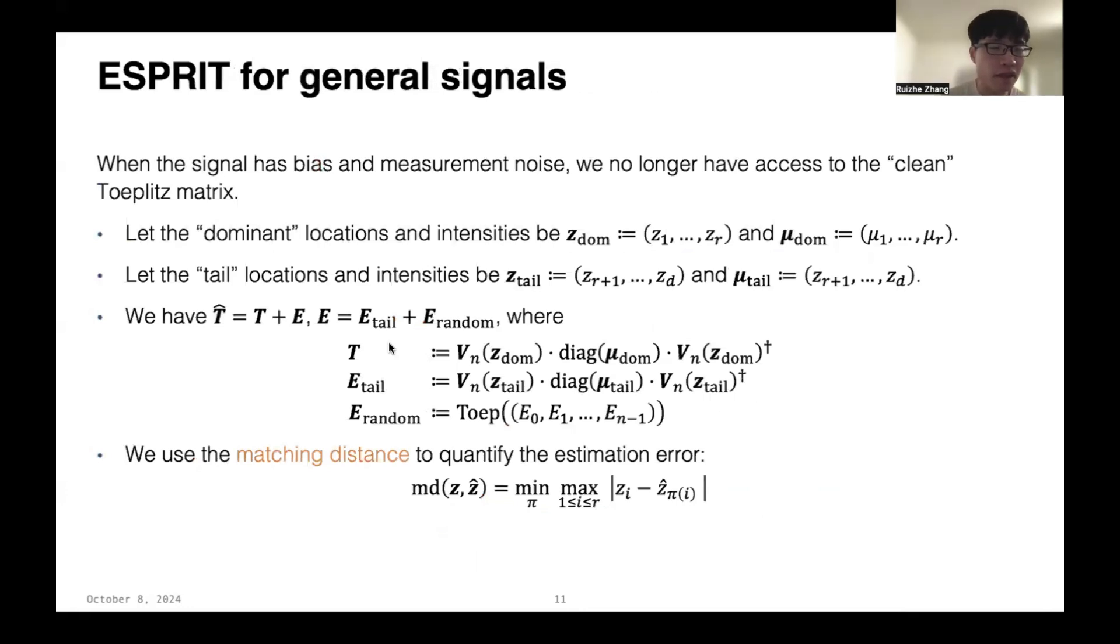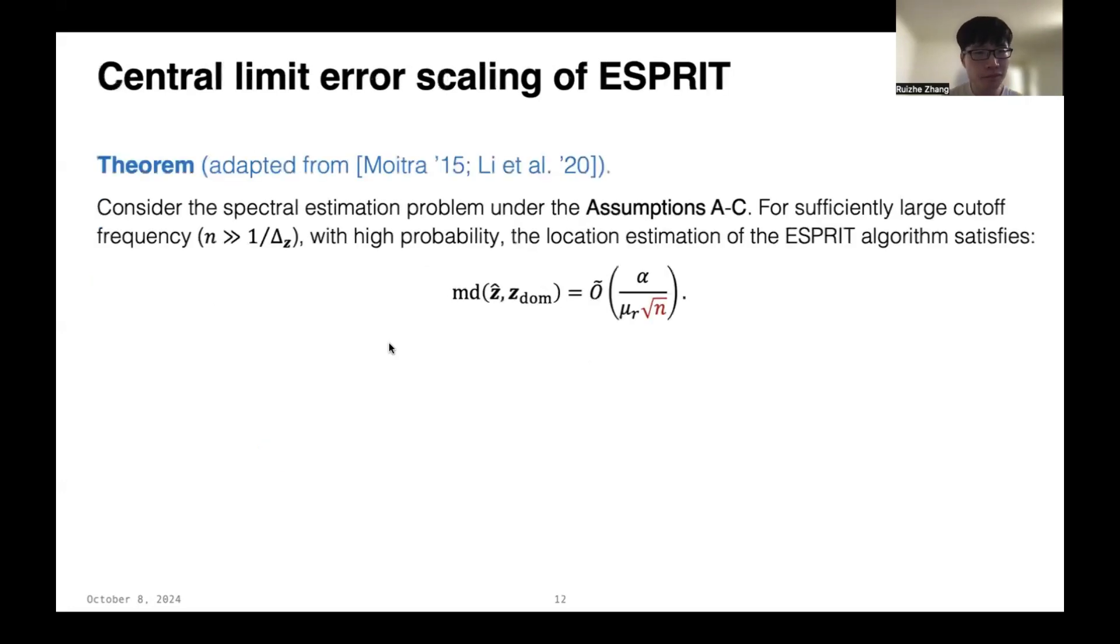Now, let's move on to the general case, where the signal has bias and measurement noise, so we no longer have access to the clean version of the Toeplitz matrix. In this case, the actual Toeplitz matrix T̂ can be written as T plus E, where T is the Toeplitz matrix of the signal part, or the clean version of the Toeplitz matrix. And E can be further decomposed into E_tail, the Toeplitz matrix of the bias part, plus E_random, the Toeplitz matrix formed by the random measurement noise. And we use the matching distance to quantify the estimation error, which is the minimum L-infinity distance between two vectors z and ẑ up to some permutation.